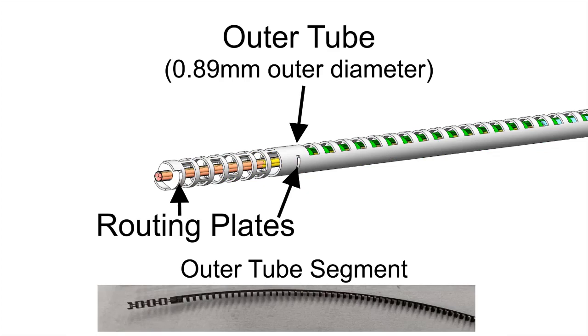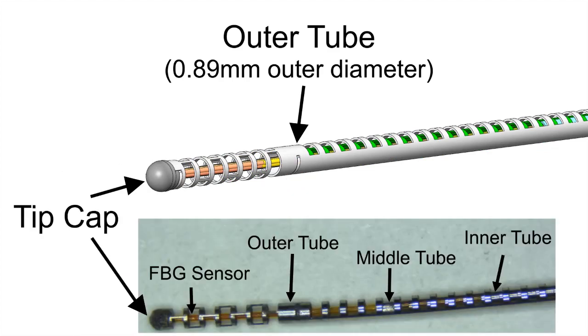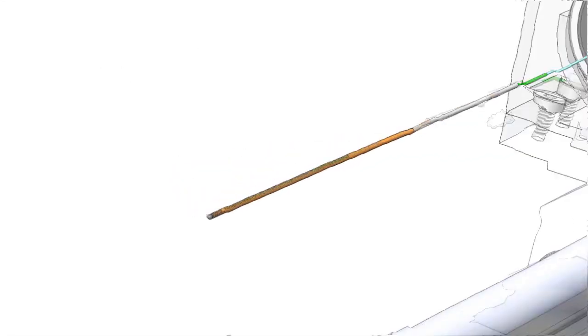This structure is covered by an outer tube, notched along the body and tip to allow for force sensing. The guidewire is then covered by a protective sheath and inserted into the compact actuation system.